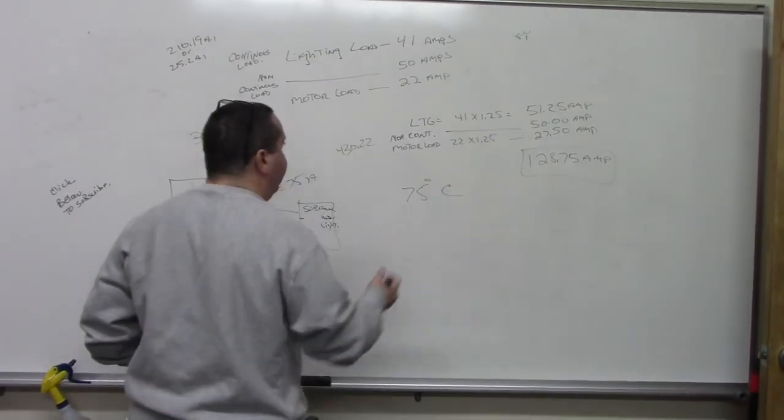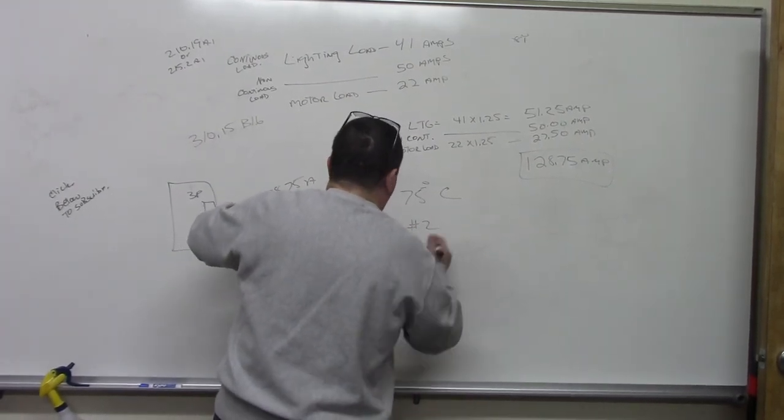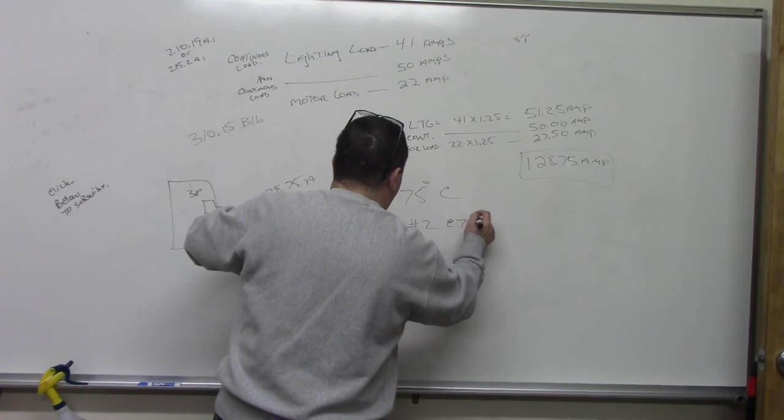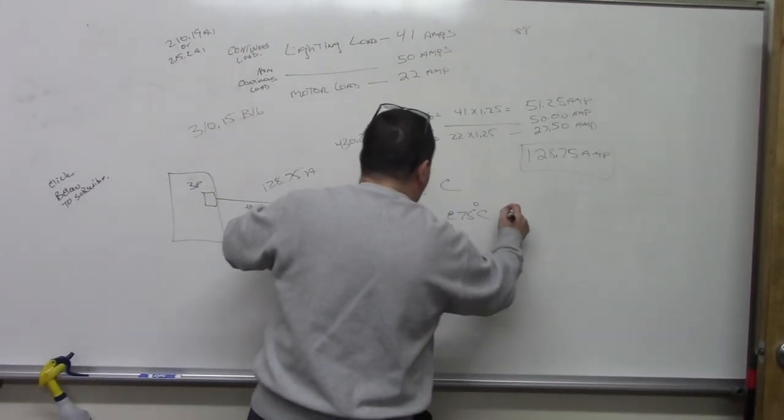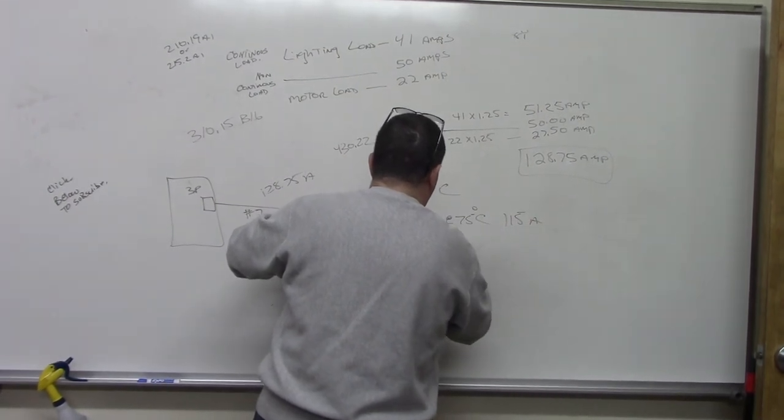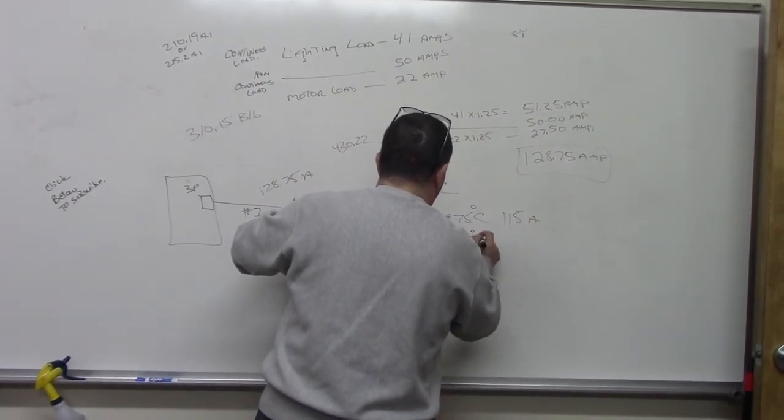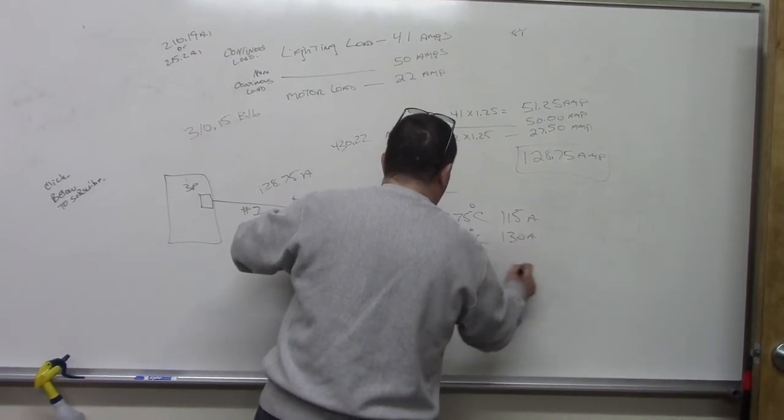We've got to go to the 75-degree column. Let's see. There's no derating here. No nothing. So a number 2 again at 75 degrees. I apologize. It's 115 amps. And the number 1 at 75 degrees Celsius is 130 amps. So we're going to use this.